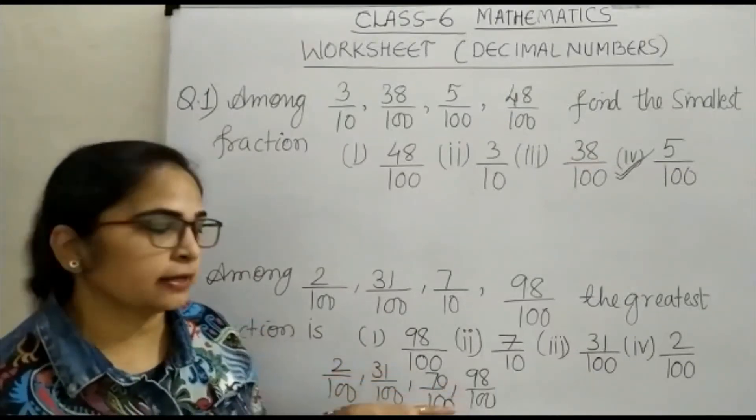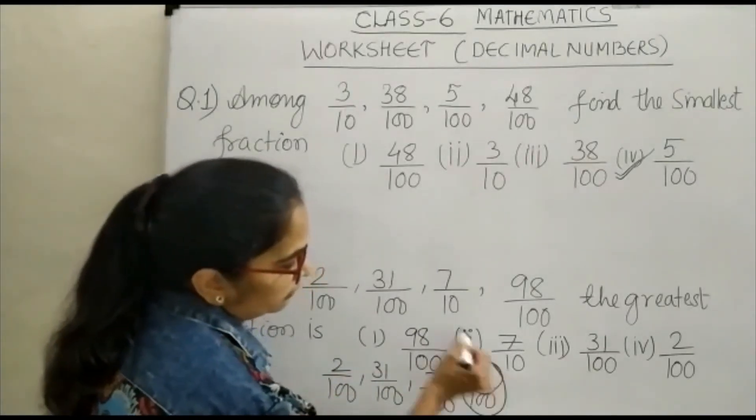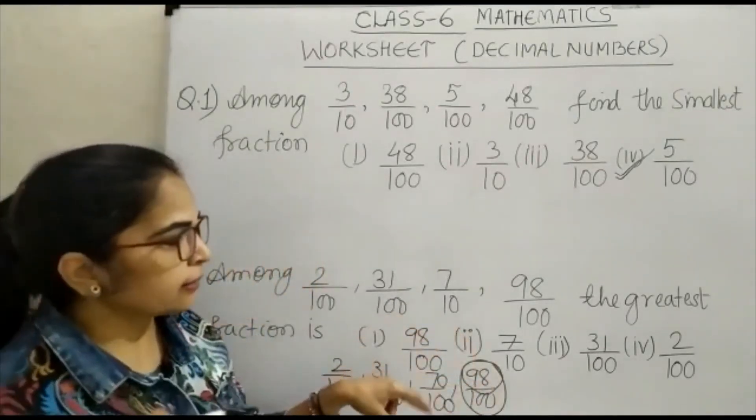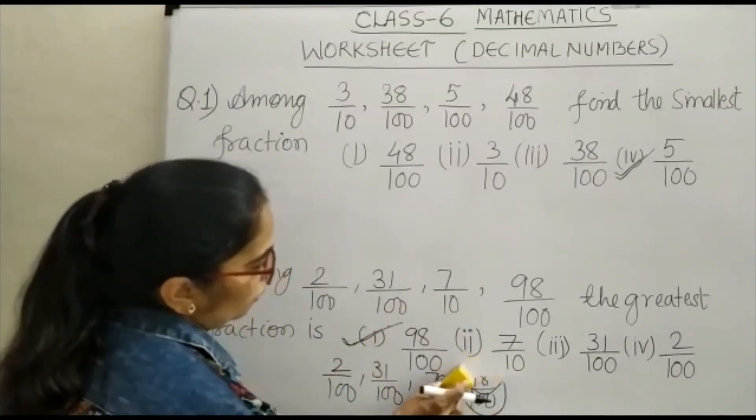2, 31, 70, 98 - so which fraction will be the greatest among all these four? 98 upon 100. So which answer will be correct? The first answer. So this is how